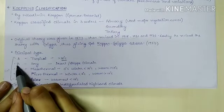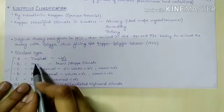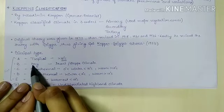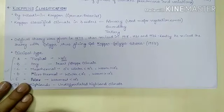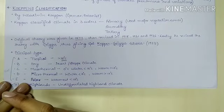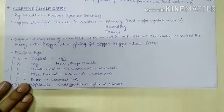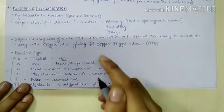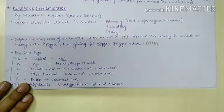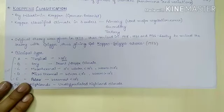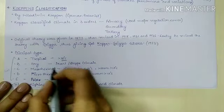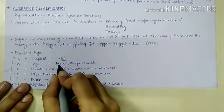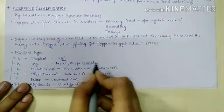Type B represents dry climate where evaporation exceeds precipitation and water content is less, hence there is water deficiency throughout the year. Here we can see desert climate or steppes climate.